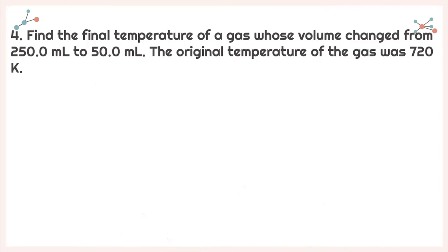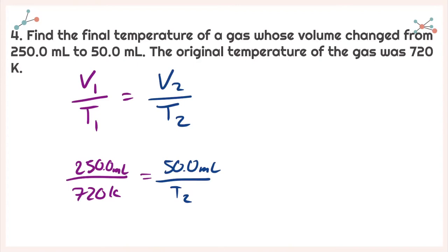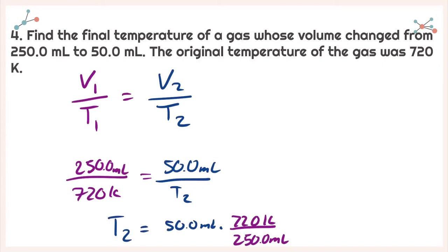Next, it asks find the final temperature of a gas whose volume changed from 250 milliliters to 50 milliliters, with an original temperature of 720 degrees Kelvin. Again, I'm going to write down my equation: V1 over T1 is equal to V2 over T2, then plug in to see what I need to solve for. I need to solve for T2. Isolating for T2, I get T2 equals 50.0 milliliters times 720 degrees Kelvin over 250 milliliters, giving me a final temperature of 144 degrees Kelvin.